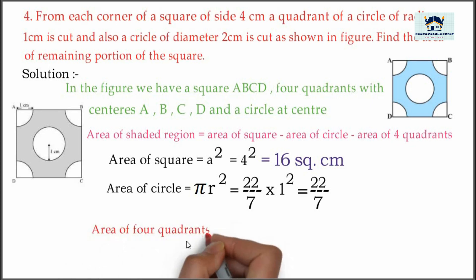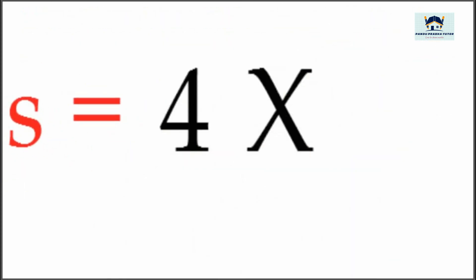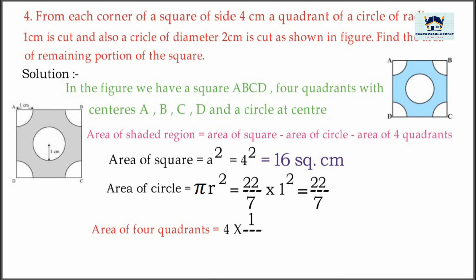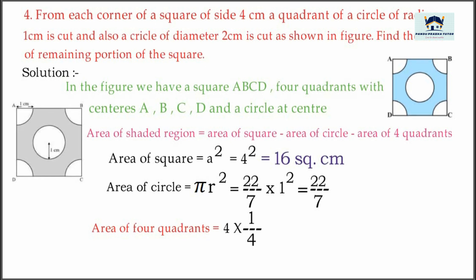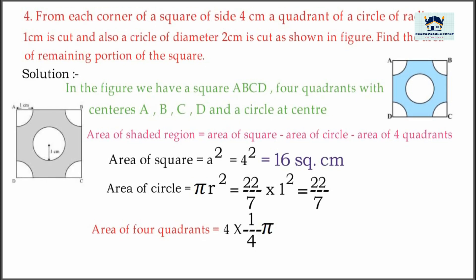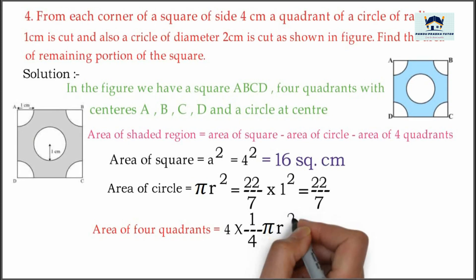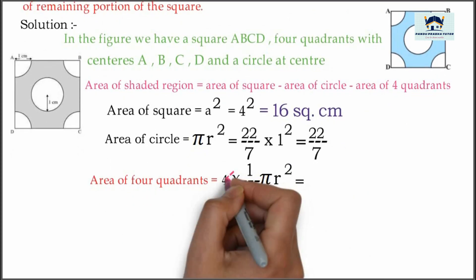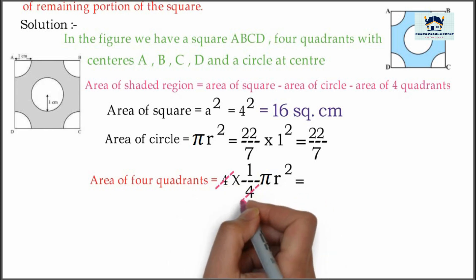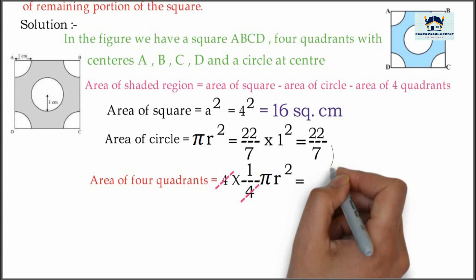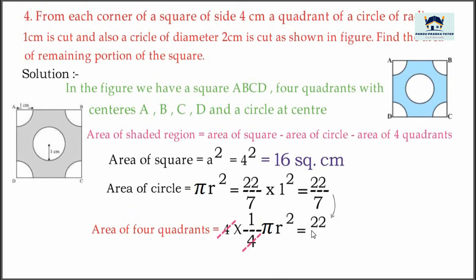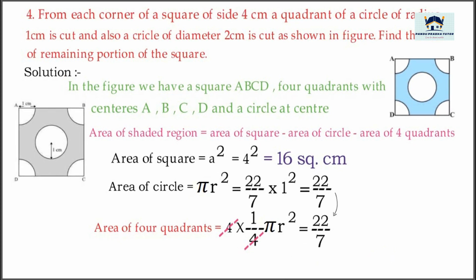Now we will find area of the 4 quadrants: 4 into one-quarter pi r squared. The 4s get cancelled, giving pi r squared. We already proved pi r squared is equal to 22 by 7, so no need to calculate again — just write the answer as 22 divided by 7.